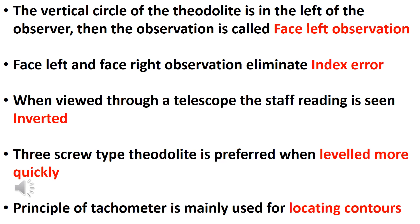Face Left and Face Right observations are used in the index. When viewed through a telescope, the staff is seen inverted. The three-screw type theodolite is preferred because it can be leveled more quickly.